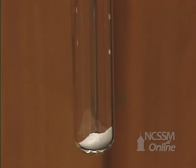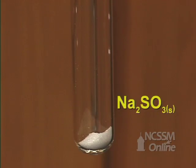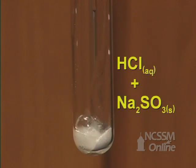In the double displacement reaction of a metal sulfite with an acid, we will start out with white sodium sulfite and add an aqueous solution of hydrochloric acid.